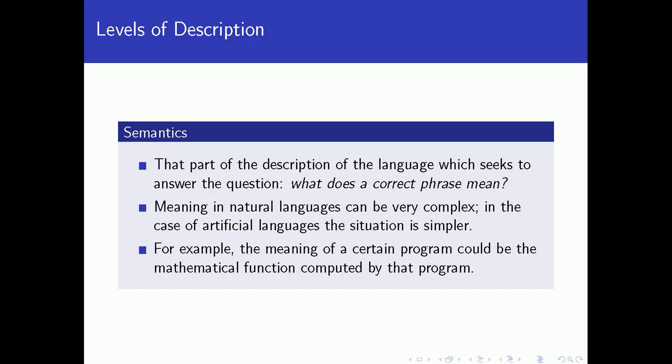Meaning in natural languages can be very complex because in some cases it can be ambiguous — a particular sentence could actually have different meanings. While in the case of artificial languages like programming languages, the situation is much simpler. Programming languages are actually designed not to be ambiguous, because if they were ambiguous, we could not produce one single correct code for the underlying program. So programming languages really have to be unambiguous.